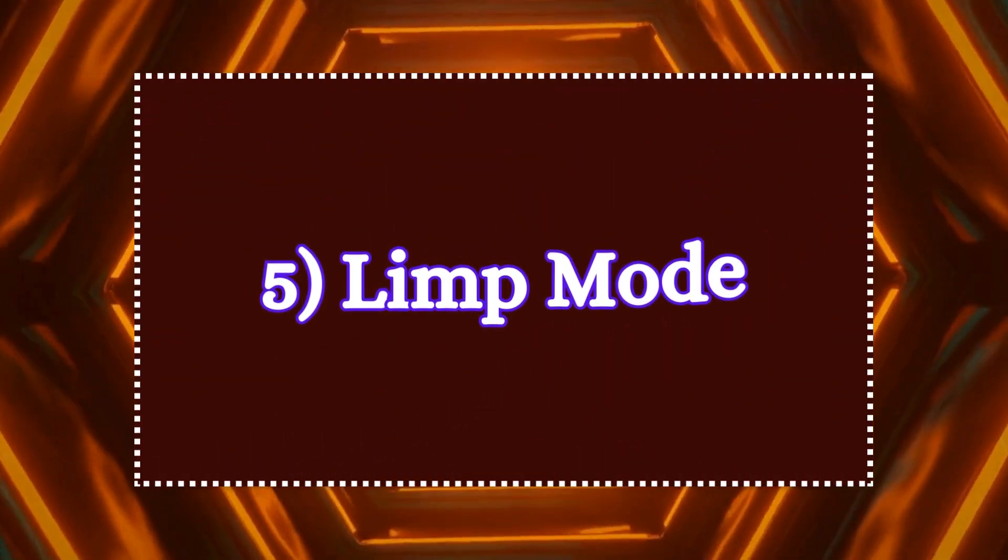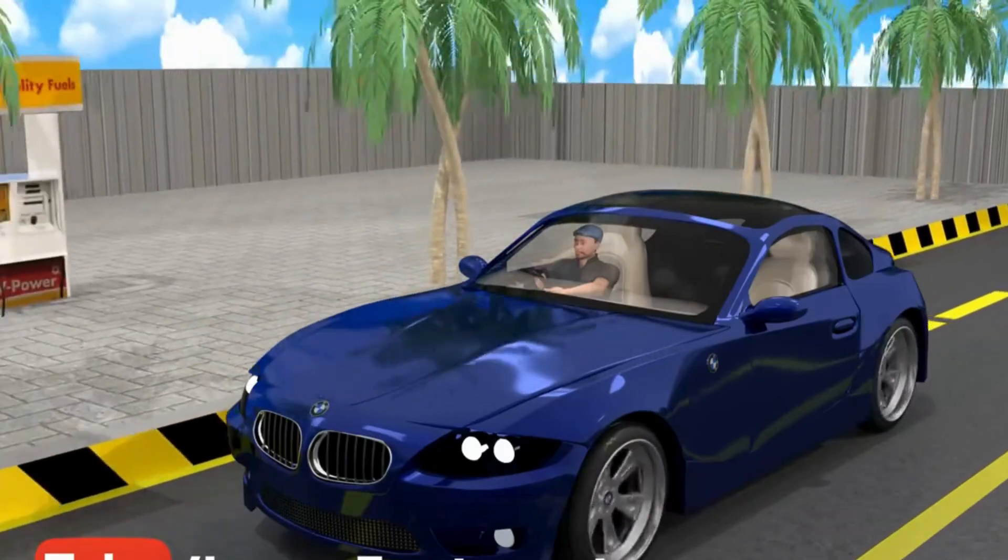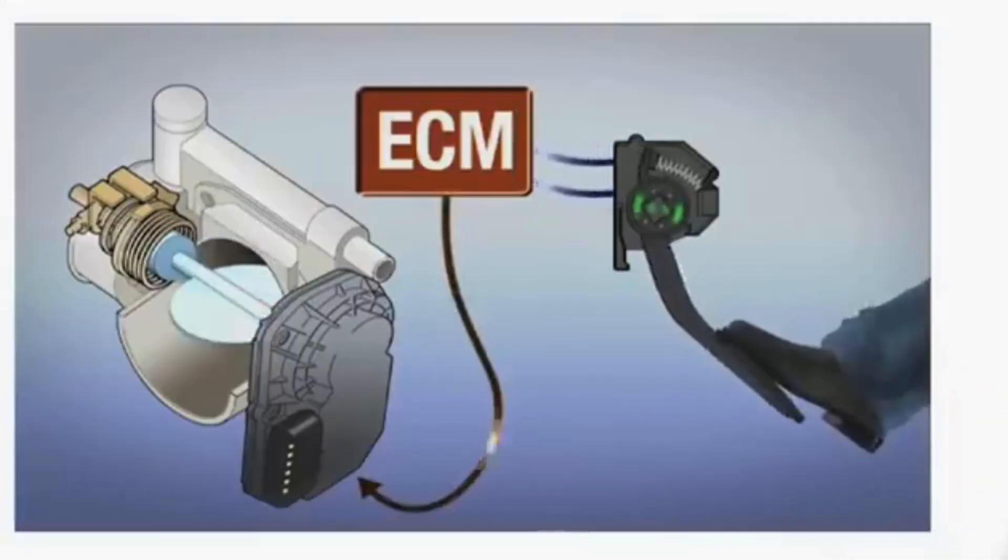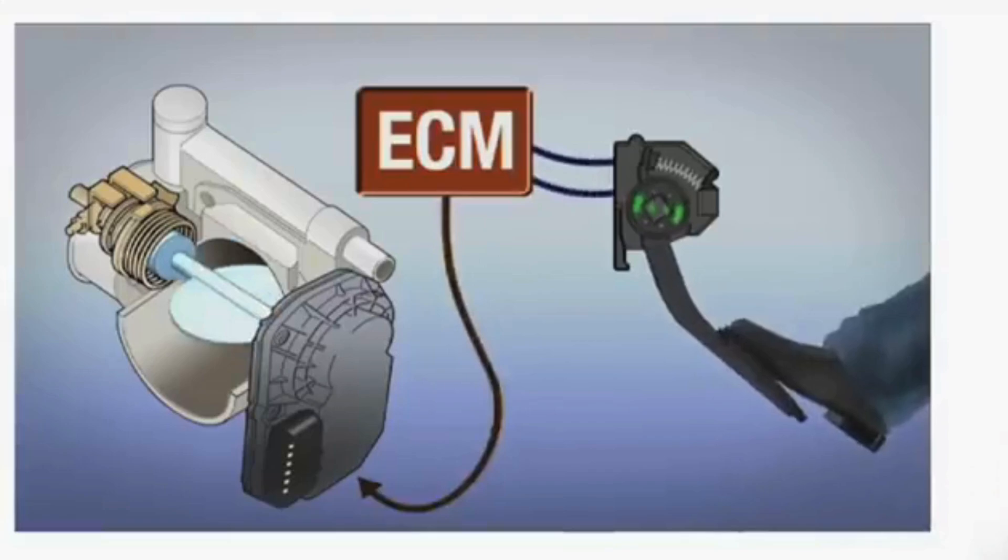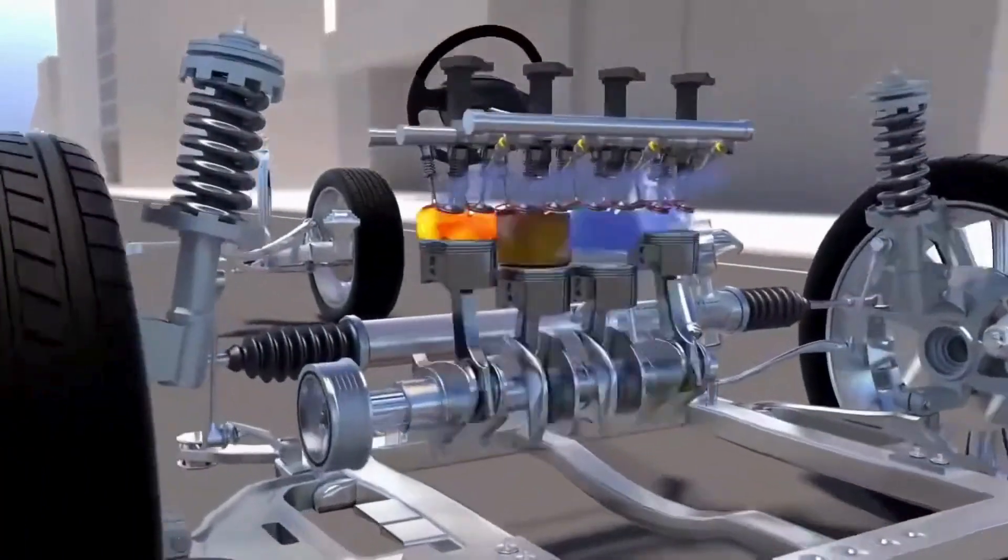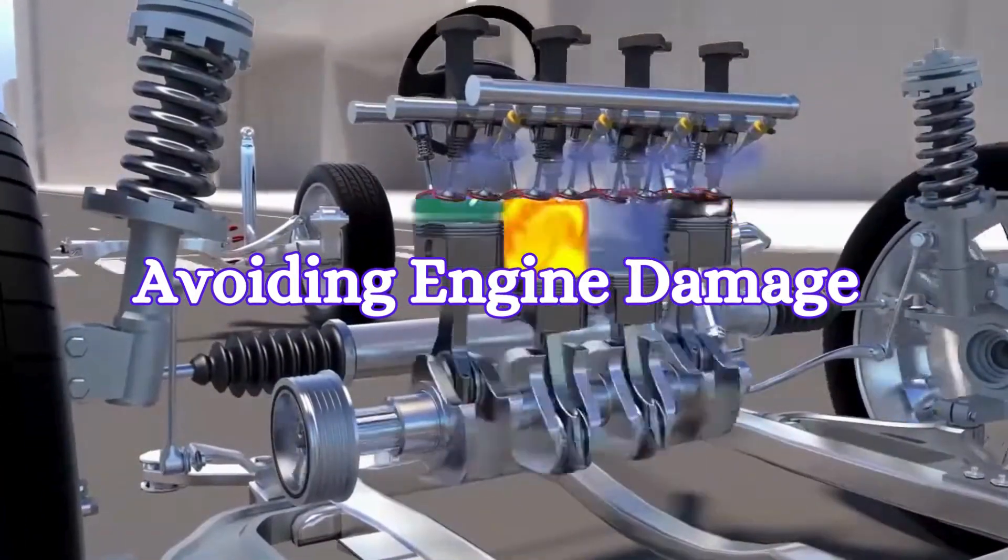5. Limp mode. Many modern vehicles have a built-in safety mechanism known as limp mode. When the throttle body fails to operate properly, the ECU puts the car into this mode to allow the driver to reach a service center while avoiding major damage to the engine.